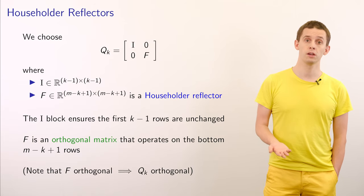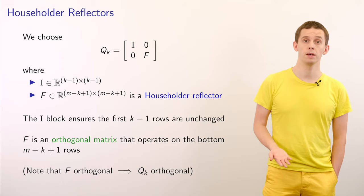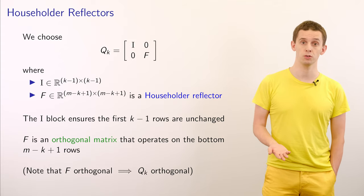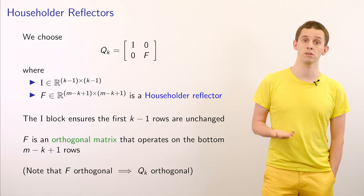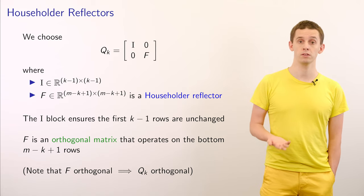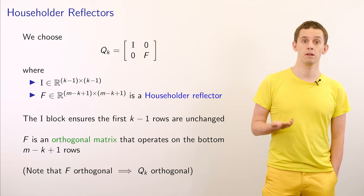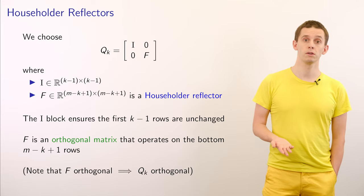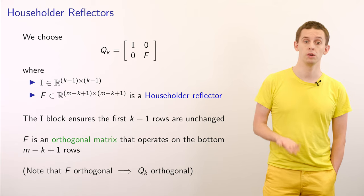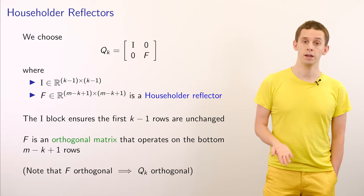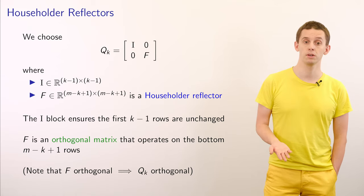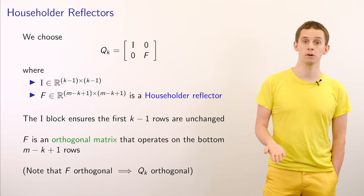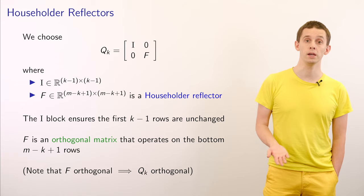We'll choose our Q_k to be a block diagonal form. In the top-left block we'll have the identity matrix of size (k-1) × (k-1), and in the bottom-right block we'll have a matrix F of size (m-k+1) × (m-k+1), which is a Householder reflector. The identity block ensures that the first k-1 rows are unchanged, and our matrix F is an orthogonal matrix that operates on the bottom m-k+1 rows. Since F is orthogonal, Q_k will also be orthogonal.